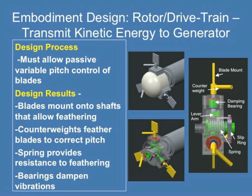The overall function of the rotor hub is to transmit the kinetic energy captured by the blades to the generator. The blades mount onto the hub using a standard 5-bolt interface across the product family. A variable pitch hub system was designed, controlled passively by the inertia of counterweights located on the blade mount. As the rotor rotates more quickly at higher wind speeds, the counterweights feather the blades to limit rotational speed to what is acceptable for the generator. A spring in the device provides resistance to the feathering to match the blade pitch schedule, and damping sleeve bearings dampen the feathering and limit vibrations.